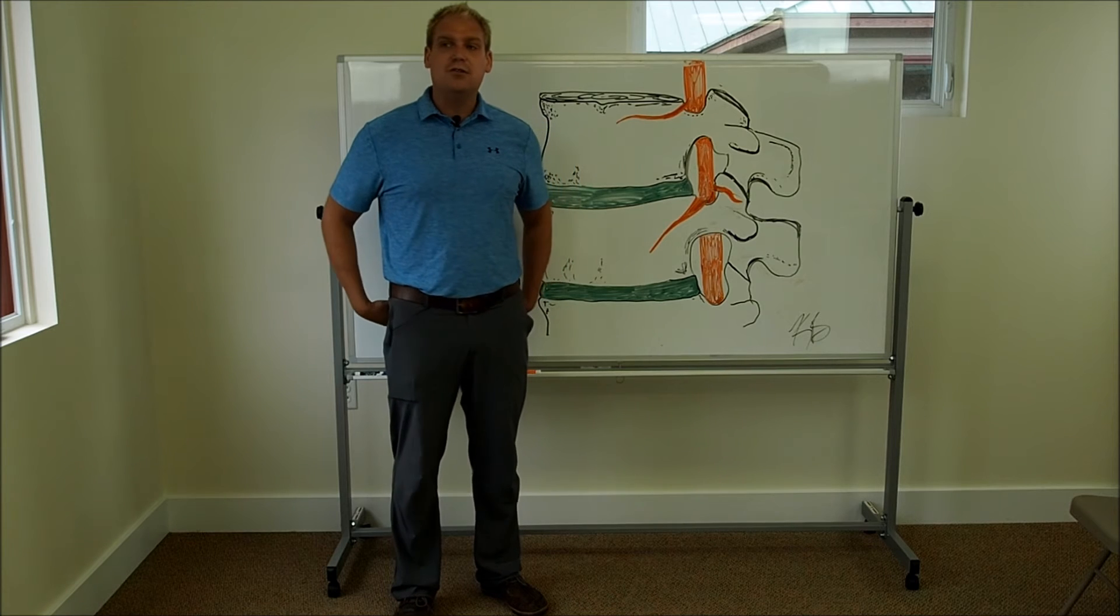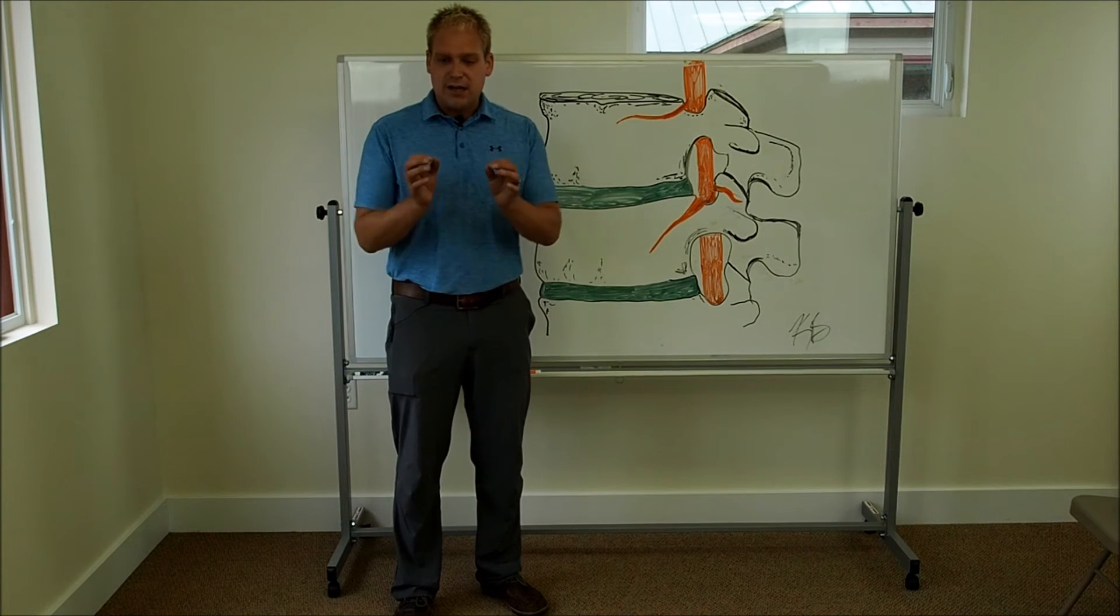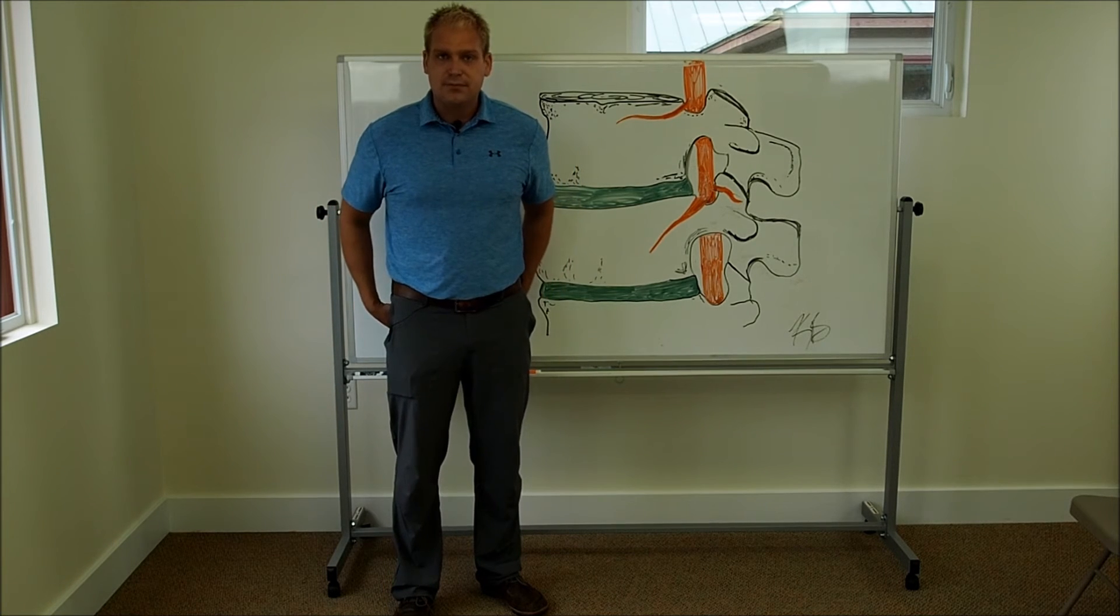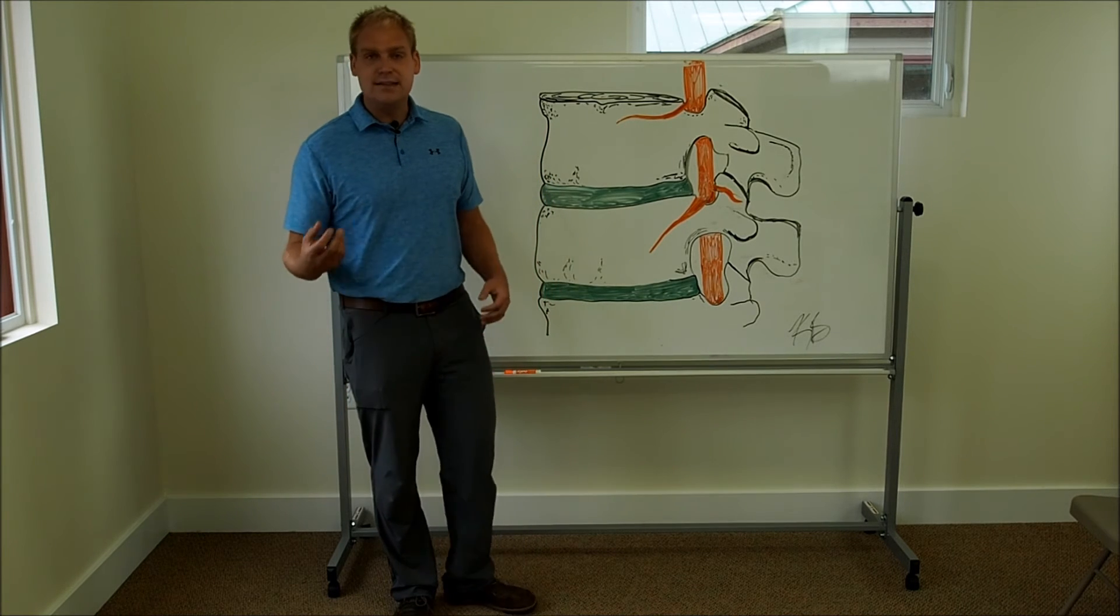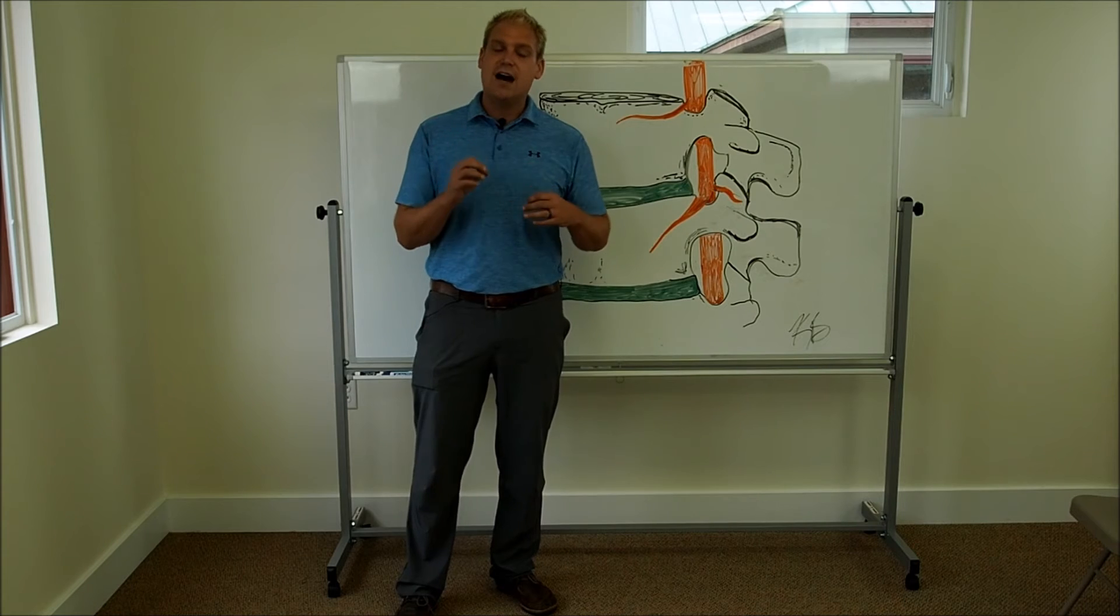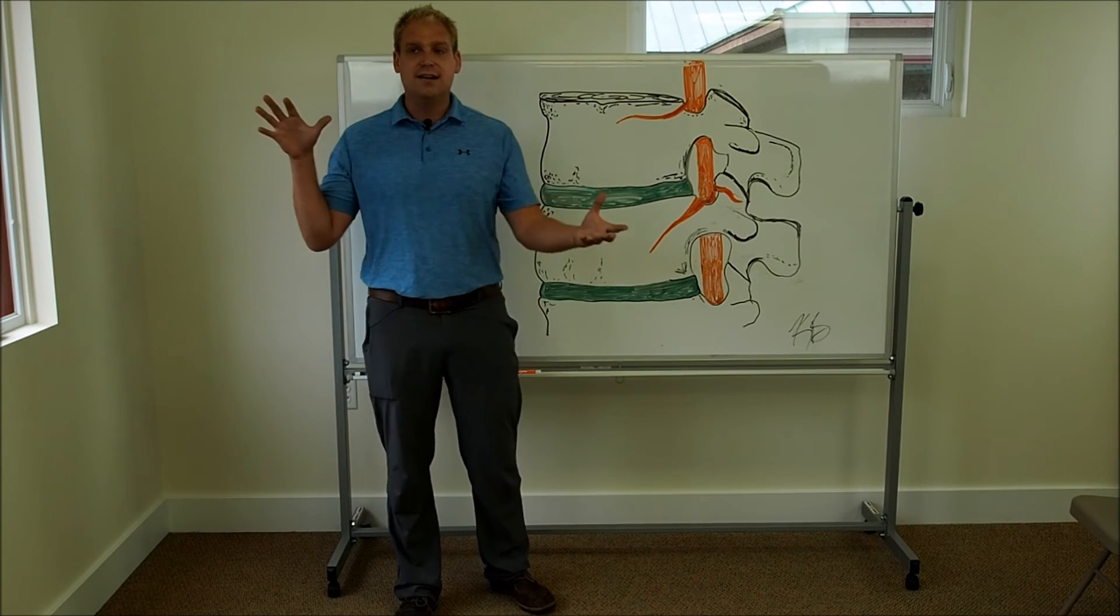That nerve then continues to follow down the lower back. It goes through the pelvis, through the butt area, and down the back of the leg into the toes. And as it goes down, it gets smaller and branches out into different positions.